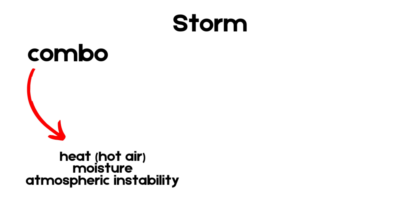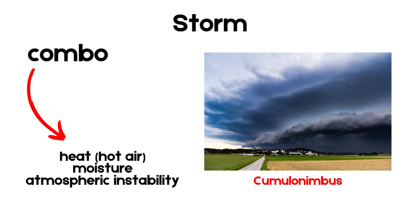Storms form when there is a combination of heat, moisture, and atmospheric instability. Warm, moist air rises rapidly due to daytime heating or the convergence of air masses of different temperatures. As the warm air rises, it cools and condenses, forming clouds known as cumulonimbus. Within these clouds, the process of electrical charge separation occurs, resulting in the formation of lightning and thunder.